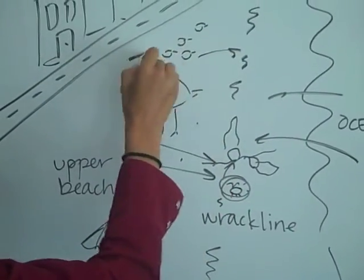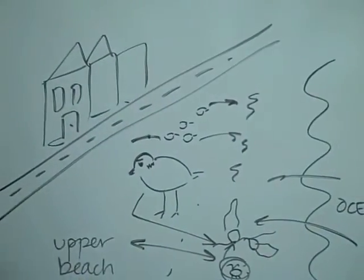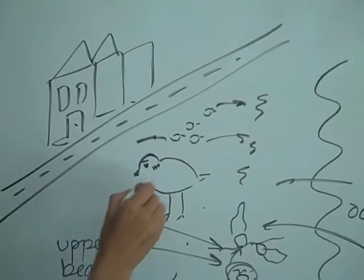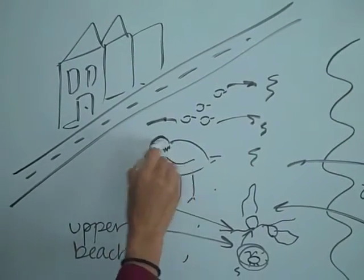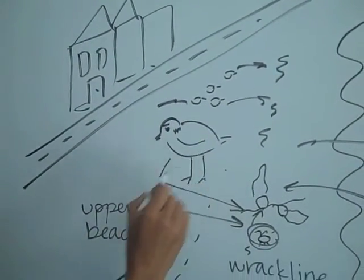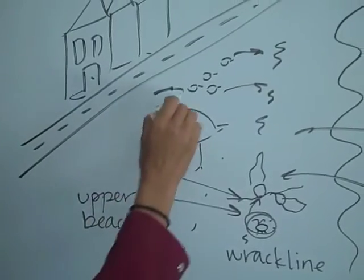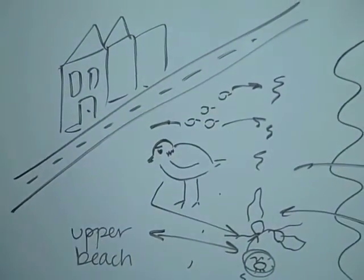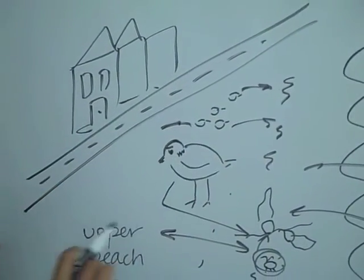And a lot of the people who are going through the area don't even know that the plovers are there, because this is a little bird that's completely sand-colored on the top, and white on the bottom. So, their whole strategy is just camouflage. So, anything that's going through the beach, they're going to try to sneak away from.